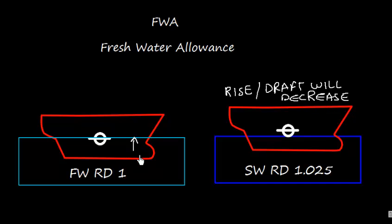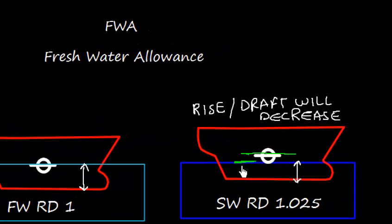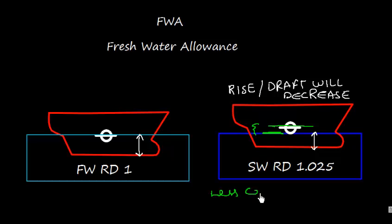Let me mark the draft. This portion is the draft, and here the draft has decreased. As per the load line, we are supposed to load up to this level in salt water. But we have loaded only up to a lower level, which means we have loaded less cargo — and that means there is a loss of earning. We don't want that.